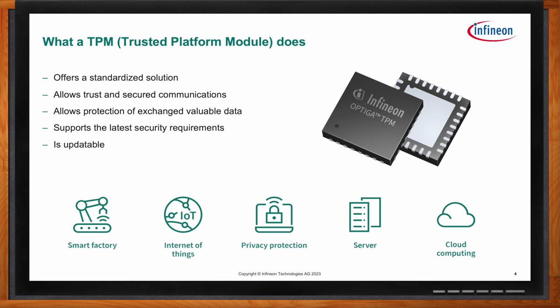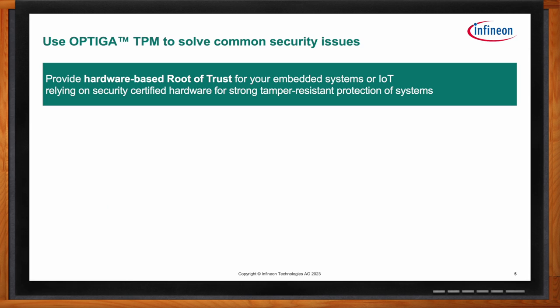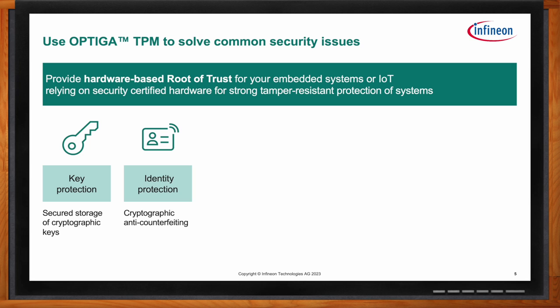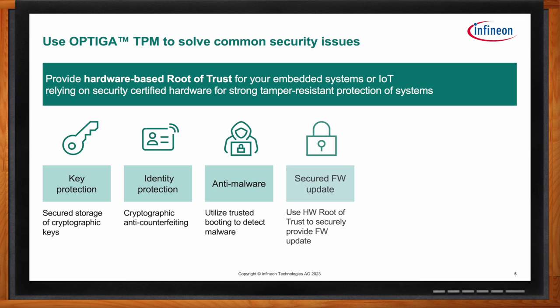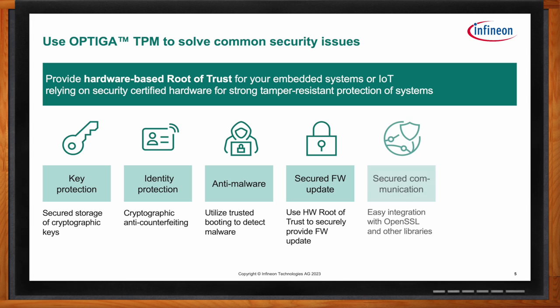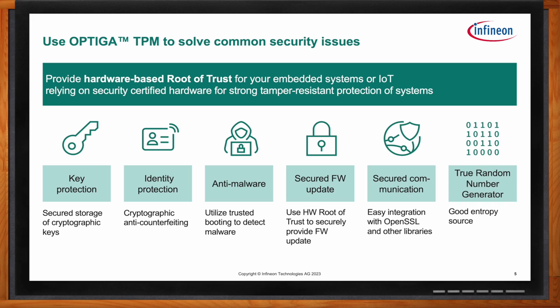Security is a huge design concern these days, so how does the OPTIGA TPM help address these issues? The TPM provides a hardware-based root of trust for your device. It's security-certified hardware with very strong tamper-resistant functionality. It can be used to protect your cryptographic keys, protect your identities, help against malware attacks, secure firmware updates, and secure your communications. It also comes with a hardware-based random number generator that gives a very good entropy source for all kinds of cryptographic operations.